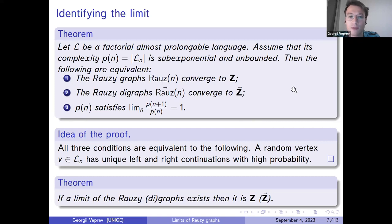The main idea of the proof is that all these three properties are in fact equivalent to the following fact: a random word of length n has unique left and right continuations with high probability. In fact, we also show that the line is the only directed or non-directed, in the case of oriented or non-oriented graphs, the only limit that can occur in this kind of situation. That is, if the limit of Rauzy graphs of a factorial, almost prolongable language with sub-exponential complexity exists, then it has to be the line.